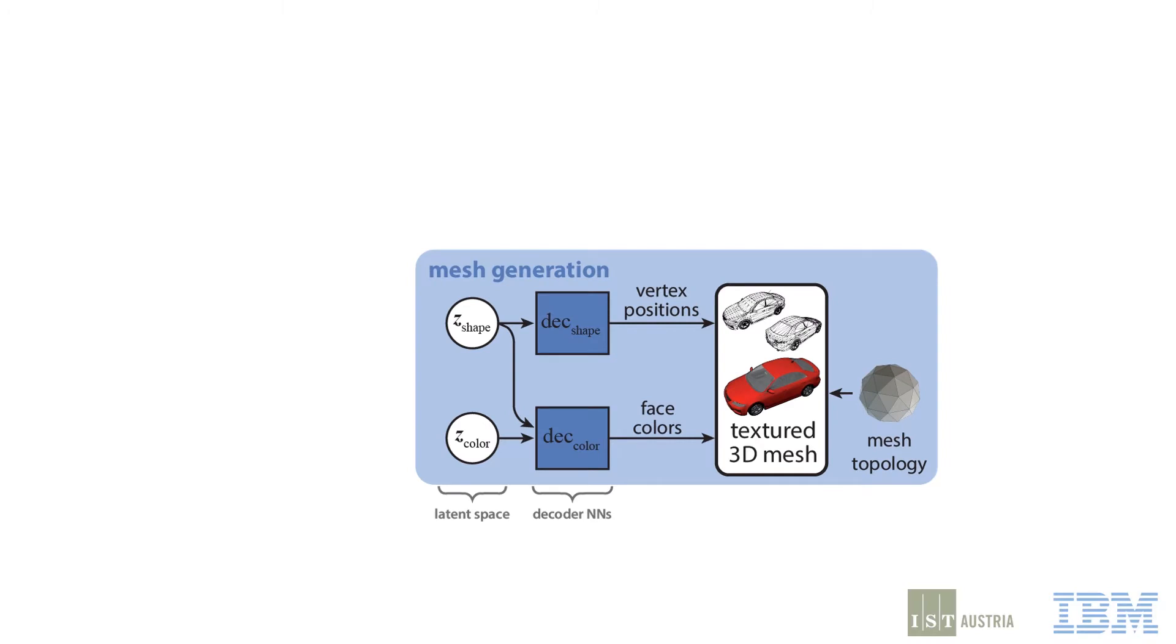To implement this idea, we design a probabilistic generative model of images, which incorporates the foreground object's shape and texture as latent variables. It first samples a mesh by drawing Gaussian shape and texture embeddings, then passing these through decoder networks to give vertex locations and face colours.